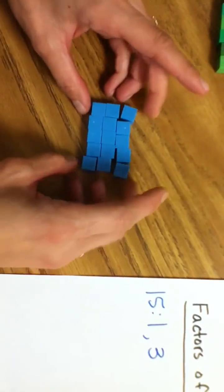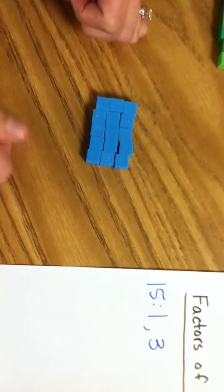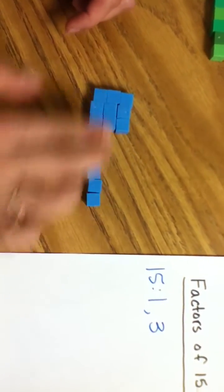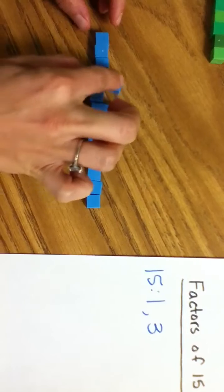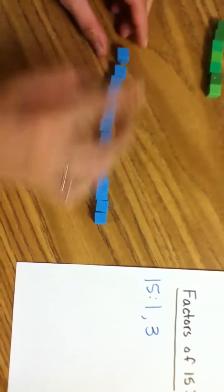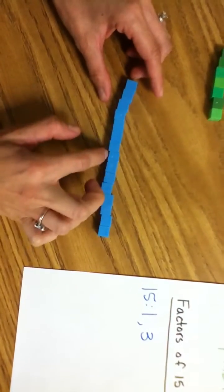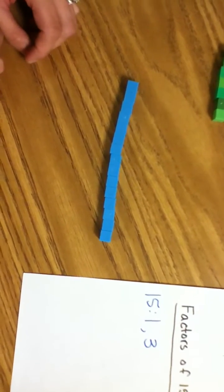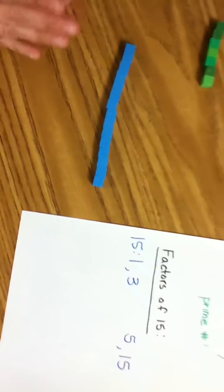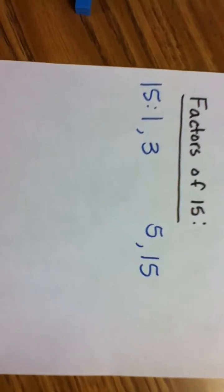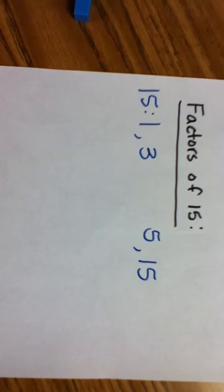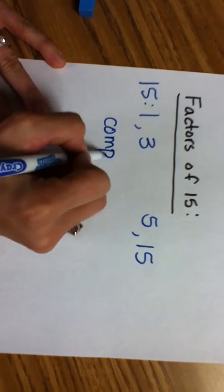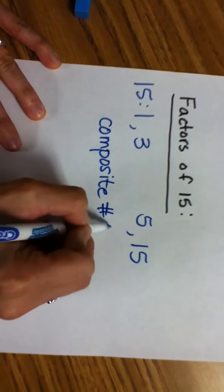And I'm going to go ahead and skip because I know the factors of 15 end here. So, I'm going to skip to a 15 by 1. Is that another array? It's a rectangle. It is. So, I found 4 different arrays, and I have 4 factors, which is more than 2, which means 15 is a... Composite number. Composite number.